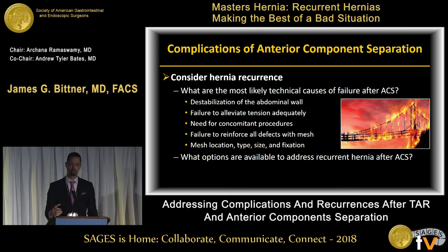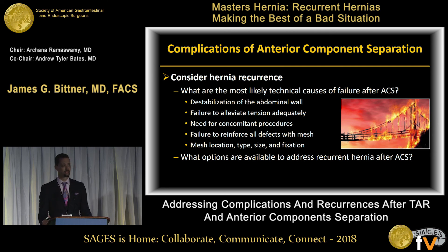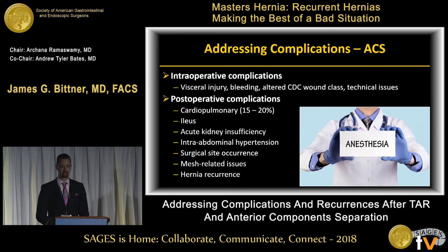When thinking about all these complications, the end of the road is potentially hernia recurrence. The most likely technical failures of ACS recurrences include destabilizing the abdominal wall, inability to achieve adequate medialization of the rectus complex, concomitant procedures, and failing to reinforce all defects with mesh. If you've cut away the external oblique aponeurosis bilaterally, that needs to be reinforced — whether as an onlay or with mesh secured to the lateralized external oblique. Options available to address recurrent hernias after anterior component separation include those complications you can see listed.